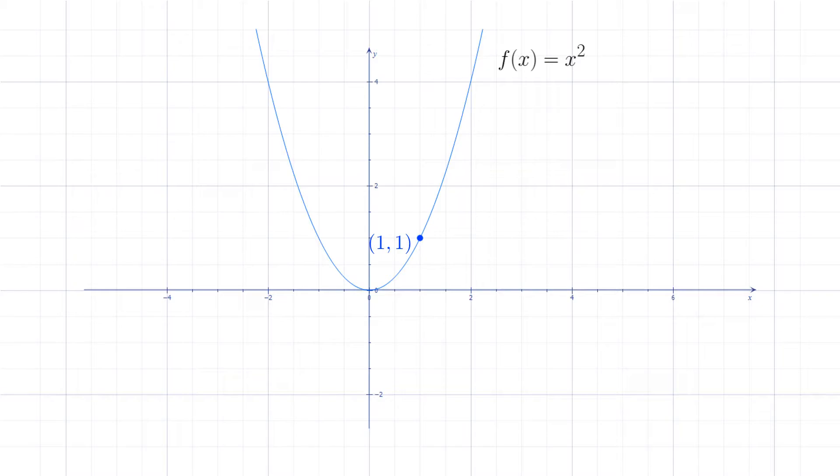Fortunately, we can find a straight line on this graph to calculate the slope with. There's a straight line at the point (1,1). Can't see it? Let's get a closer look.